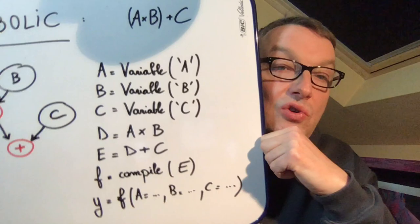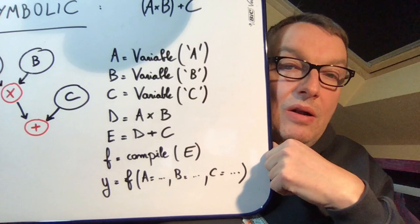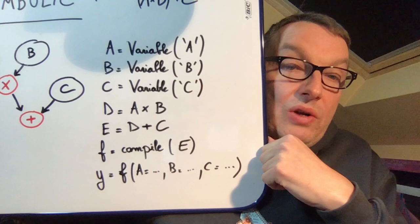Once the graph is fully defined, we would compile it using a library function, and this would give us a proper function—let's call it F.